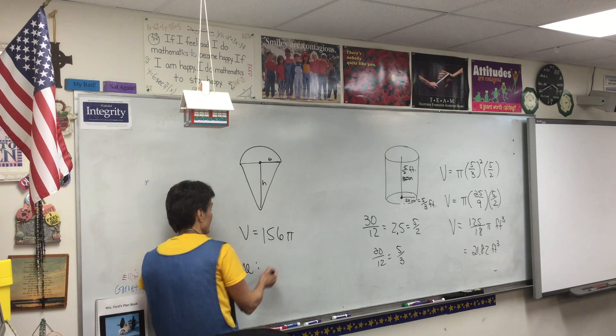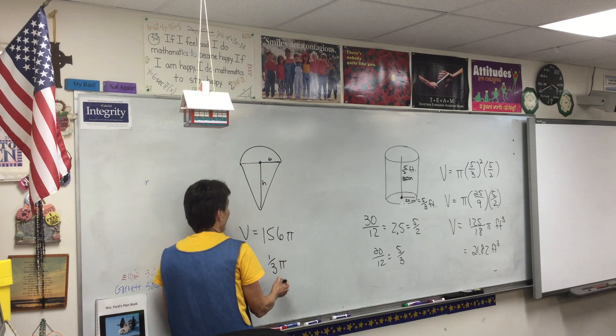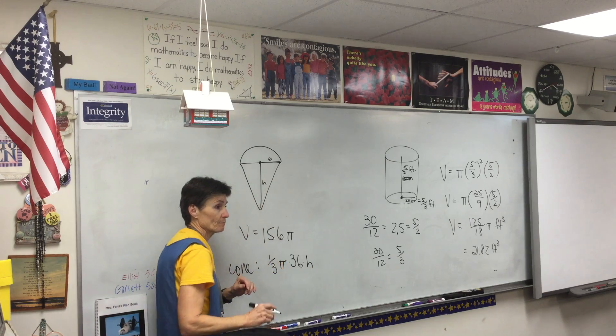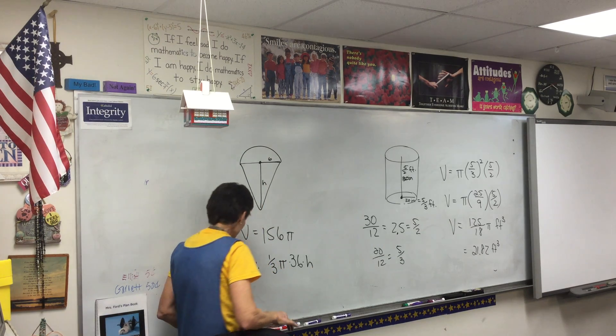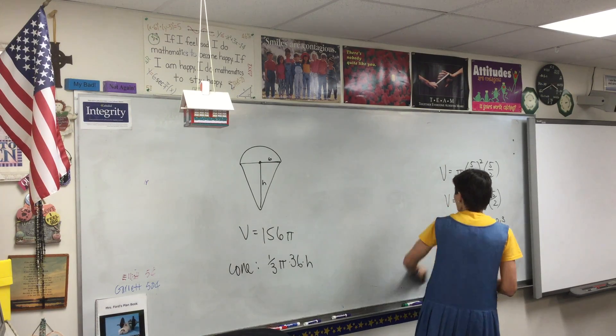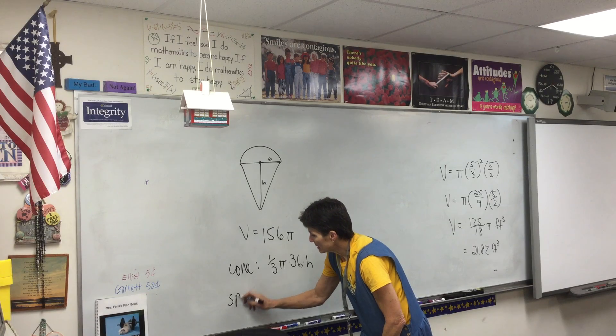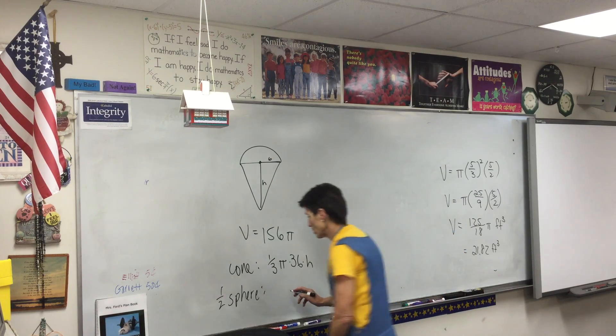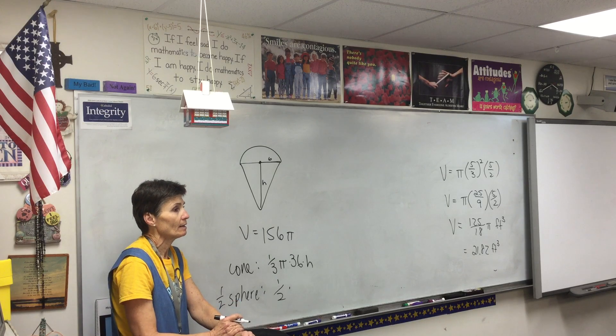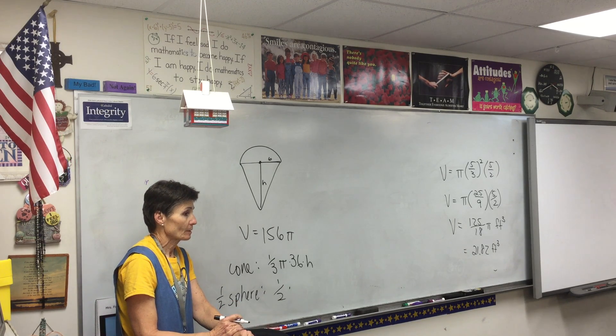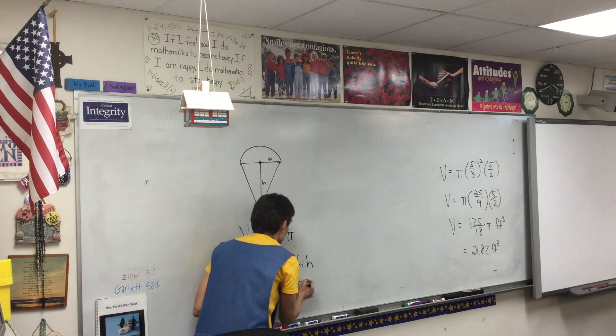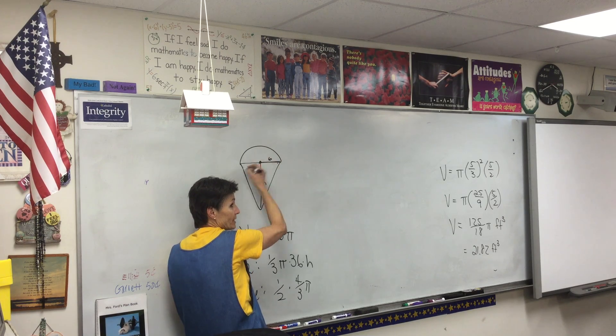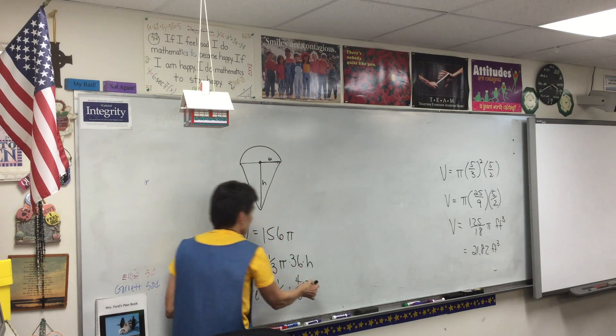The cone volume is 1/3 π r squared which is 36, times h. Is that equal to 156? No, we don't set that equal to 156. We need that's the cone. Now we need the half sphere or the hemisphere. That will be 1/2 times what's the formula for the volume of a sphere? 4/3 π r cubed and isn't the radius of the cone the same as the radius of the ice cream? So that will be cubed is 216.